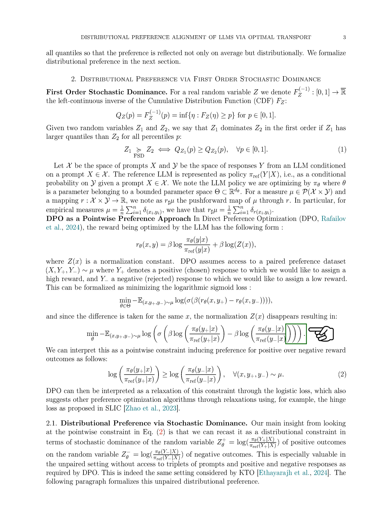We gained a key insight by examining the pointwise constraint in equation POSNEG_PREF. We realized that we can transform it into a distributional constraint by focusing on the stochastic dominance of two random variables. One random variable, z-carat-plus_theta, represents the logarithm of the ratio of the probability of positive outcomes under the policy being optimized to the probability under a reference policy. The other random variable, z-carat_theta, does the same for negative outcomes. This approach is particularly useful in scenarios where we do not have access to triplets of prompts and responses, aligning with the setup considered by KTO.